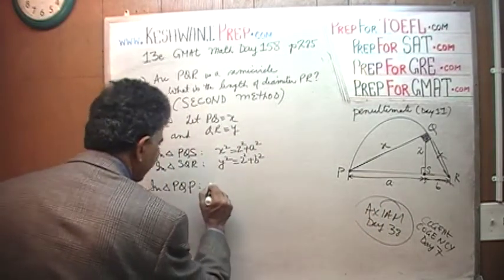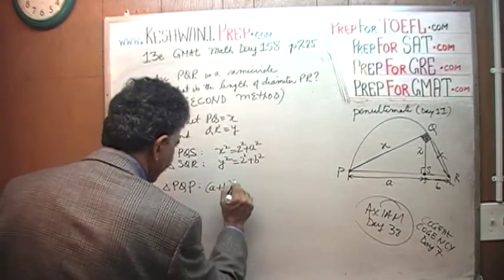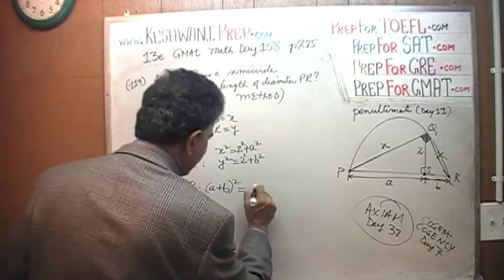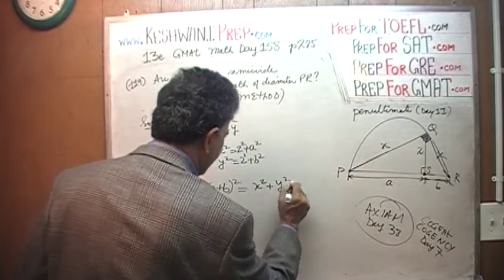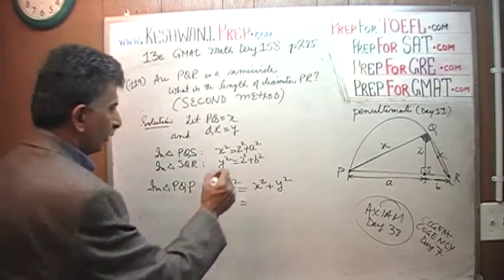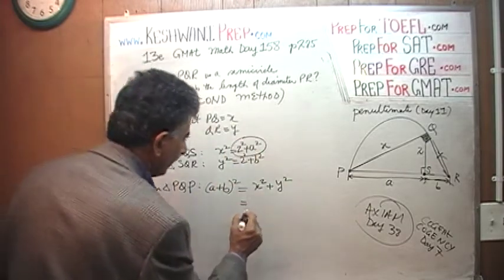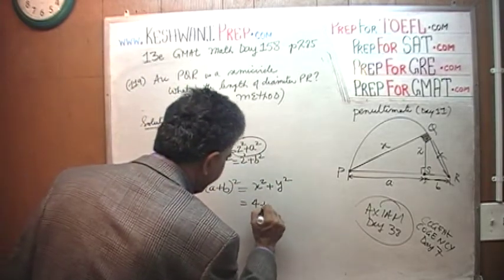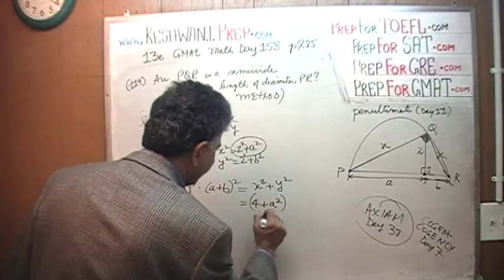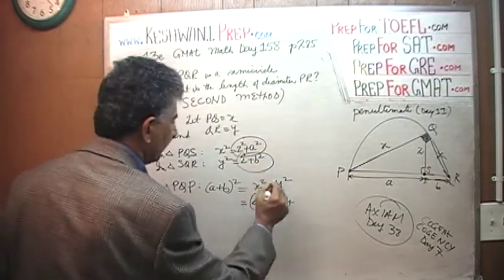So A plus B squared equals X squared plus Y squared. But we know what X squared is. X squared is 2 squared plus A squared, so it's 4 plus A squared. Similarly, Y squared is 4 plus B squared.